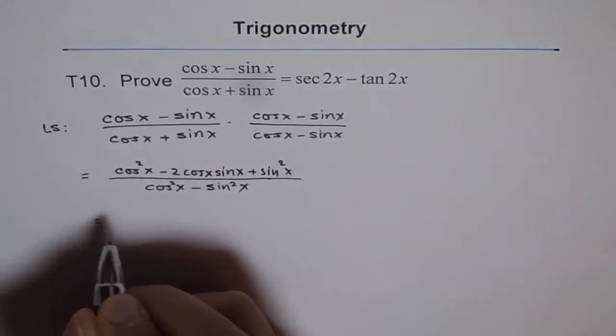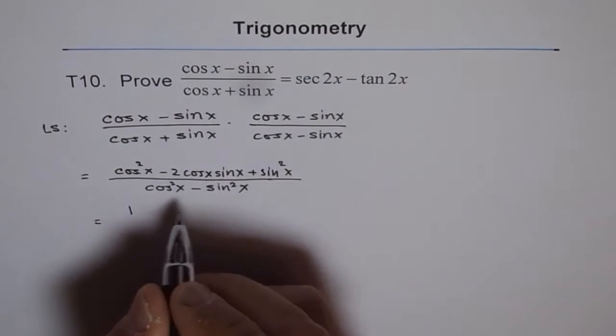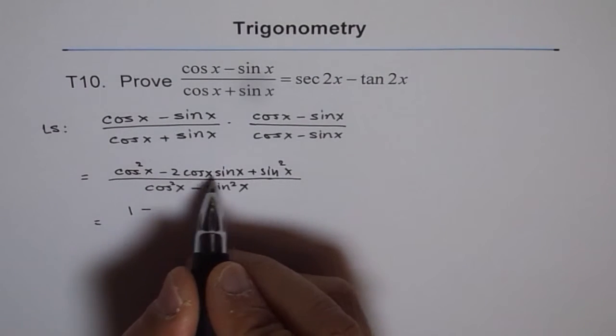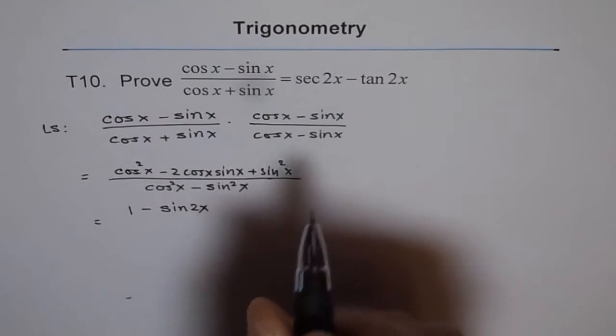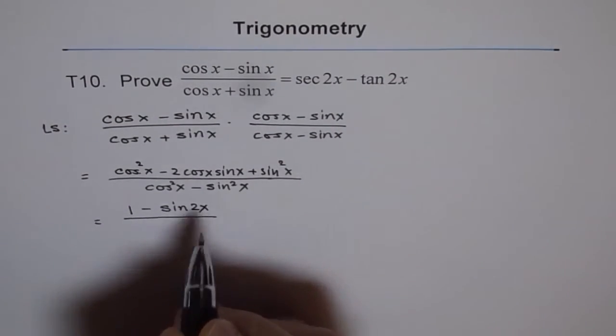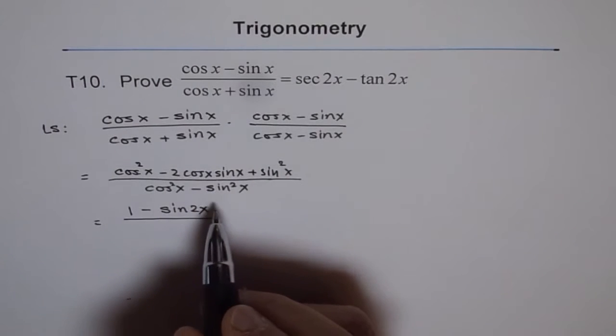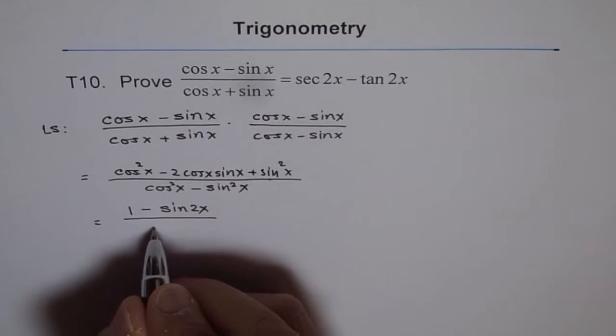Now you can see cos square x plus sine square x is 1. So we'll write 1 here. And minus 2 sine x cos x is sine 2x. Since we need something in 2x, better to write them now in sine and cosine of 2x, double angle formulas. Cos square x minus sine square x is cos 2x.